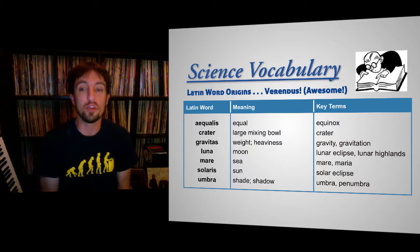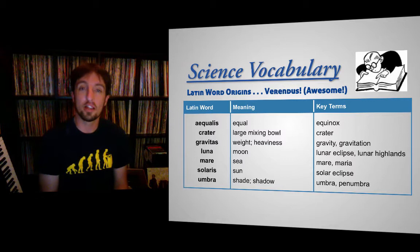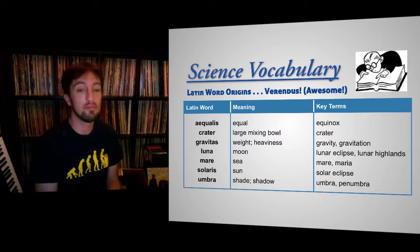Luna is the word for moon. And so, anytime we talk about something lunar — lunar eclipses in this chapter, lunar highlands — you know that that's relating to the moon.